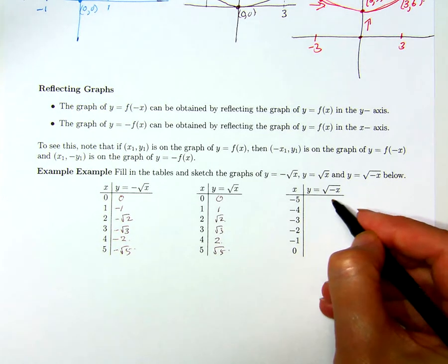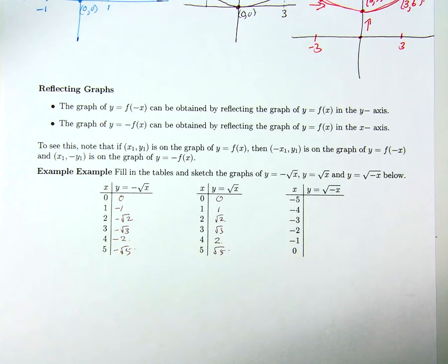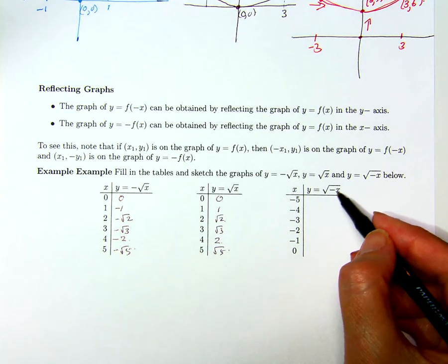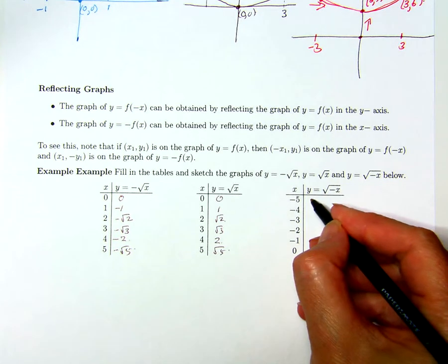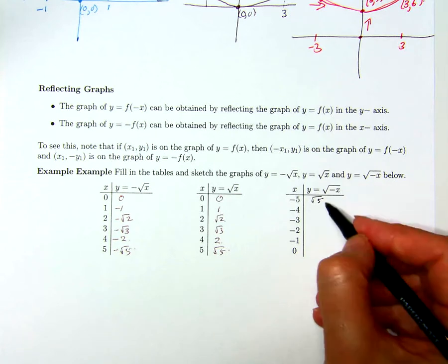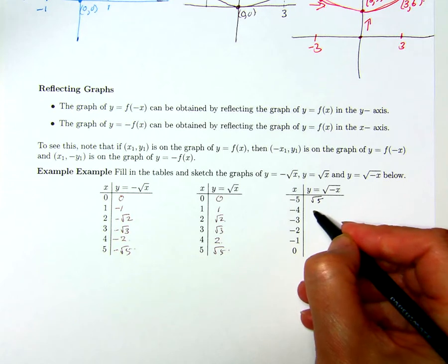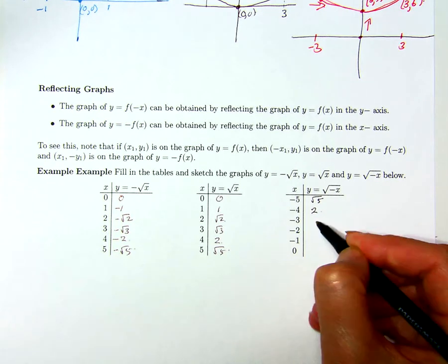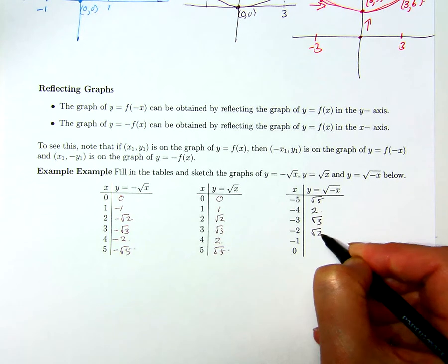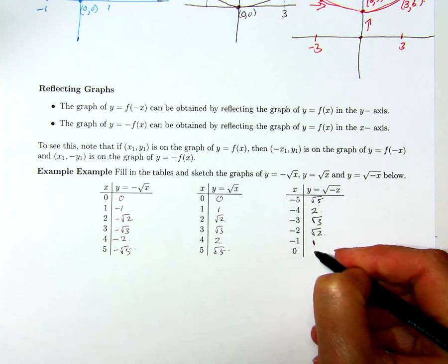And if I first multiply x by a negative and then take the square root, I can't apply this to positive x. The domain actually changes. For y = √(-x), I have: x = -5 gives √5, x = -4 gives 2, x = -3 gives √3, x = -2 gives √2, x = -1 gives 1, and x = 0 gives 0.